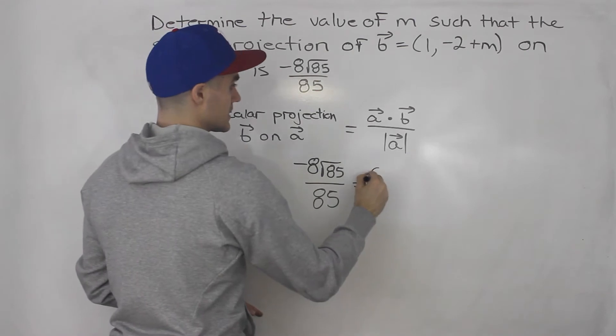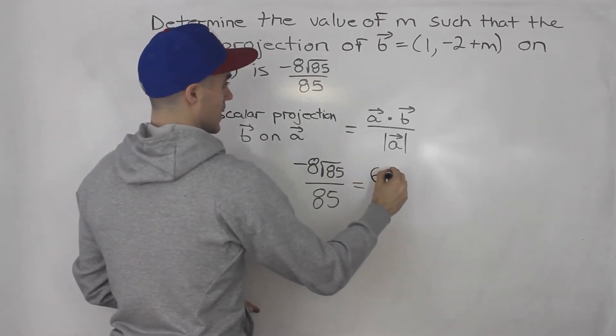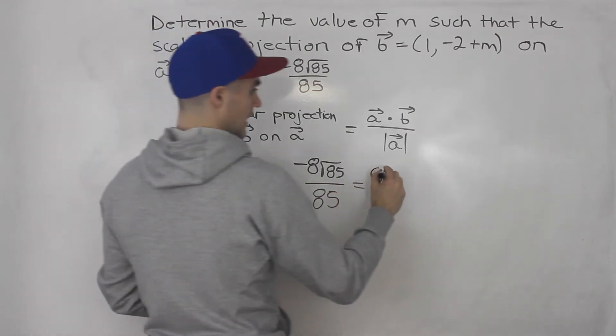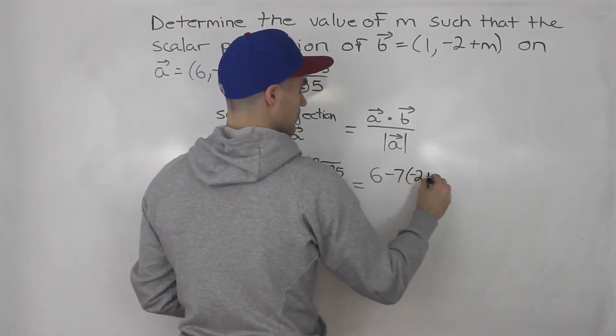And then -7 times -2+m, so we'd have -7 and then -2+m here.